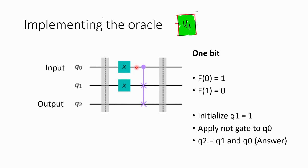When q0 is 1 this should not change. When q0 is 0 this should change to 0. So basically I need to do an AND of q0 and q1 to get the answer. So it ANDs q0 and q1 and stores the result in q2.